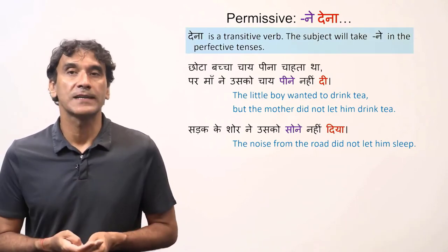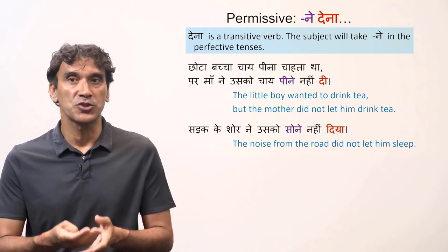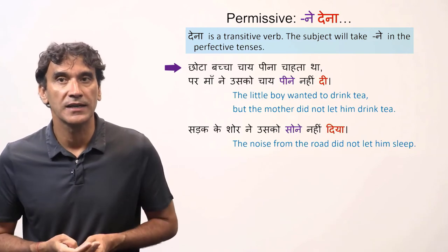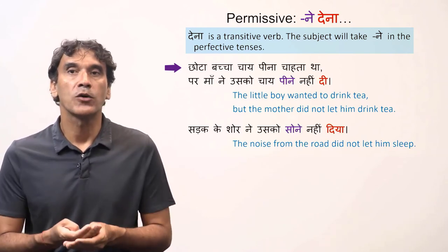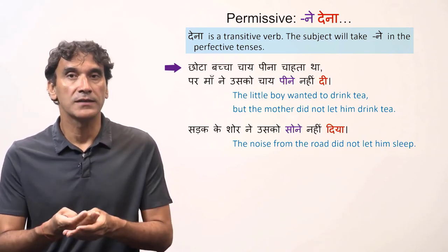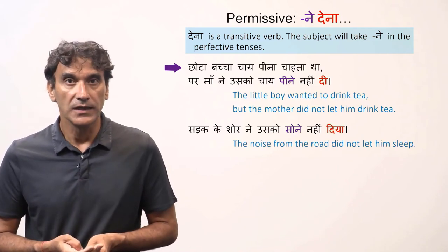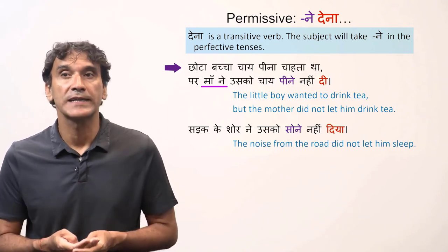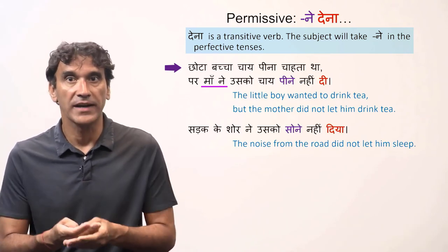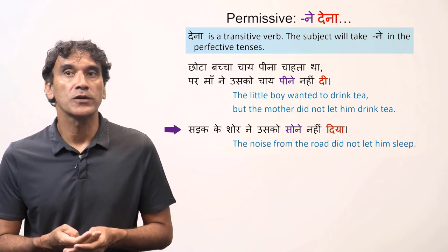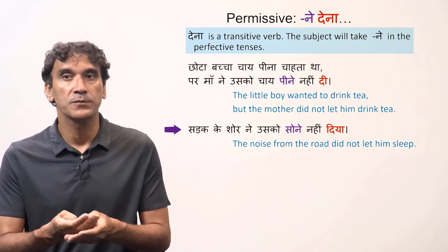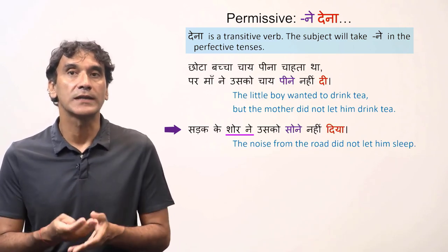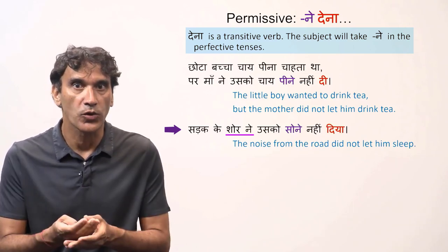'Chota bacha chay peena chahata tha par maan ne usko chay peene nahi di' — the little boy wanted to drink tea but the mother did not let him drink tea. The subject here is 'maan ne'; since the tense is perfective, the subject takes the postposition 'ne'. Similarly, 'sadak ke shor ne usko sonne nahi diya' — the noise from the road did not let him sleep. 'Shor' (the noise) is the subject, so it takes the postposition 'ne': 'shor ne'.